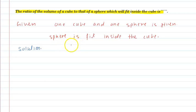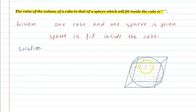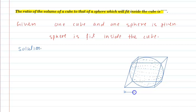So let's draw the diagram. This is the required diagram to explain this question. Look at the cube, and inside it the sphere of the cube, which has diameter 2r.